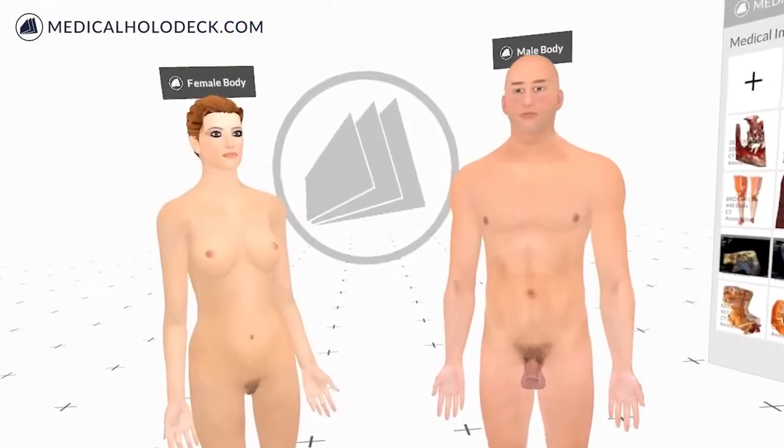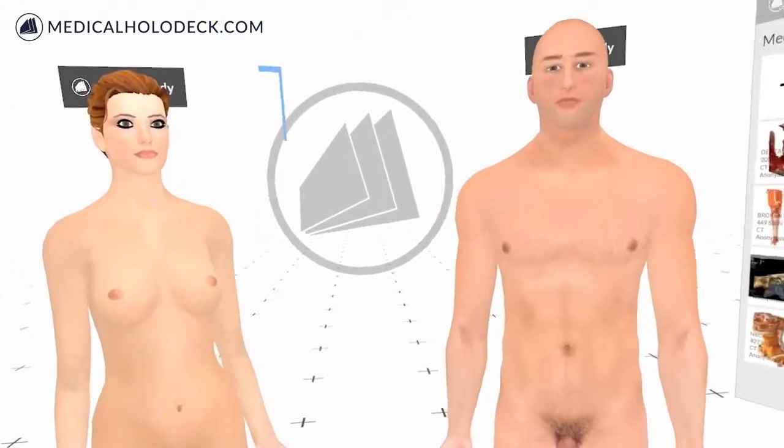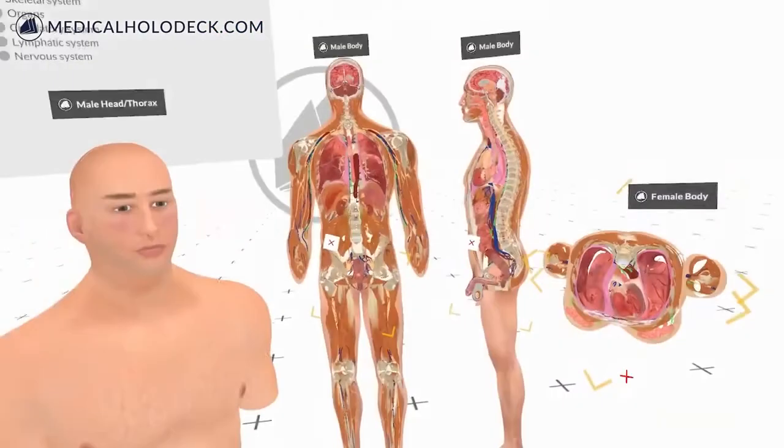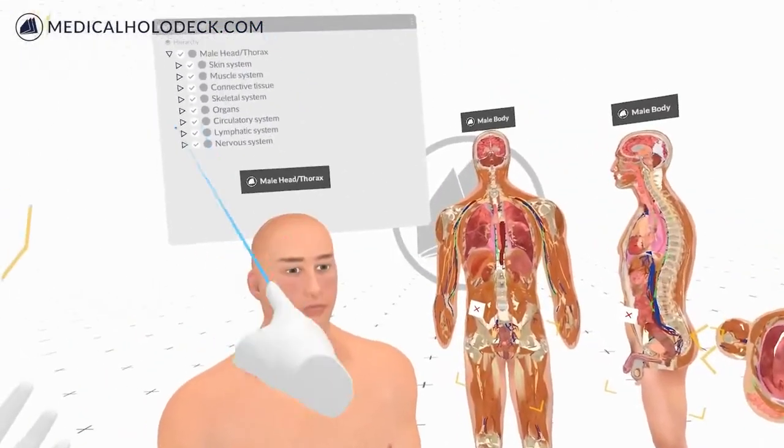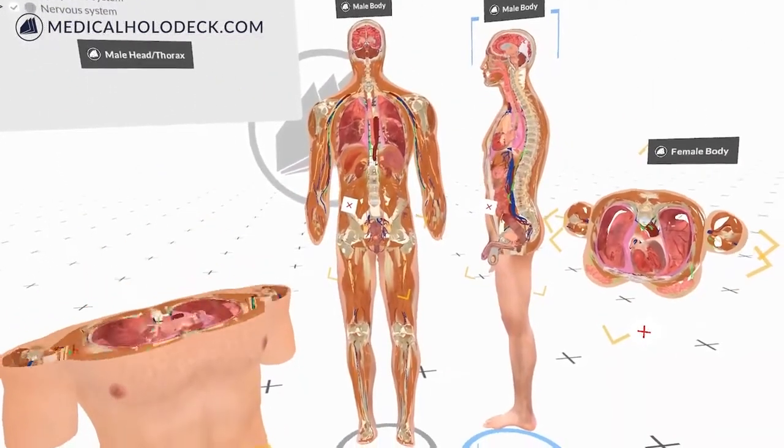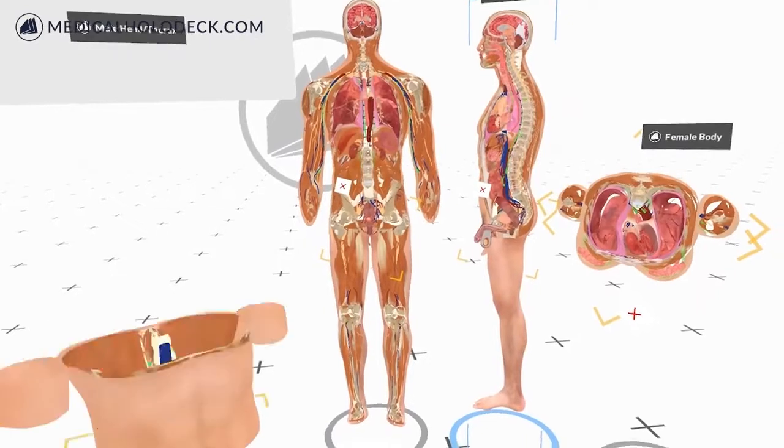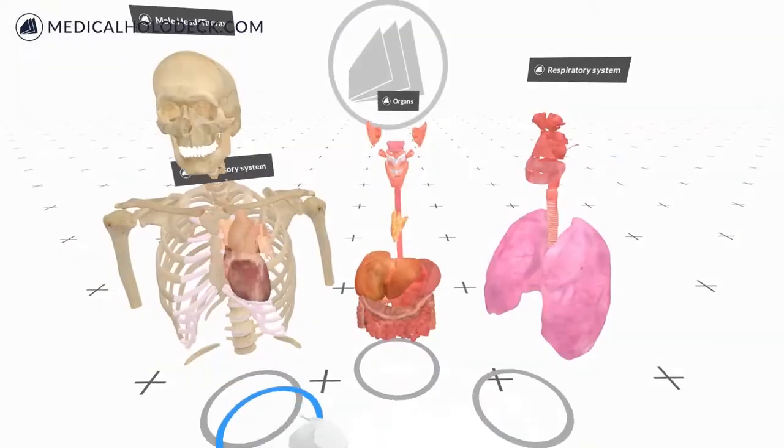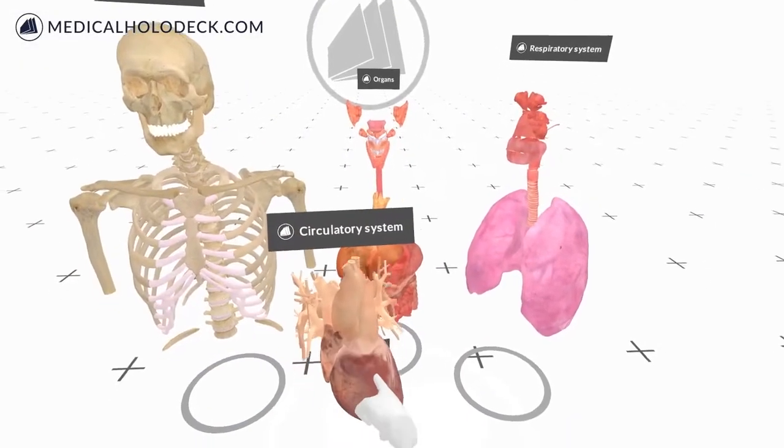The whole human anatomy for female and male genders is available. Each model is divided into systematic hierarchies allowing users to navigate and dissect with ease through more than 2000 anatomical structures. Additionally, each structure can be separated and analyzed individually.